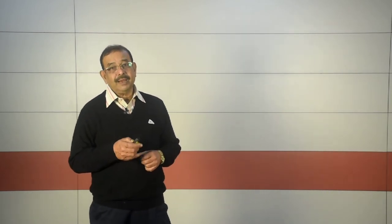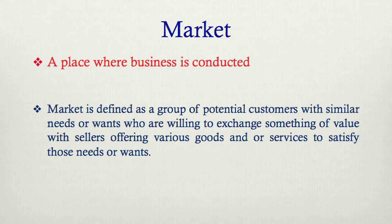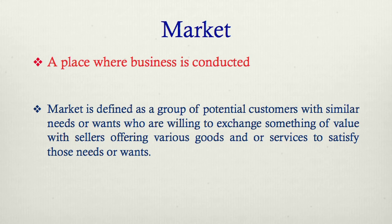For example, the television market comprises the actual customers of television and the prospective future customers. They are all parts of that market — television market in Guwahati, television market in Northeast. In that case it can be place-specific. But the formal definition from the SLM states: market is a group of potential customers including actual customers with similar needs or wants, who are willing to exchange something of value with sellers offering various goods and services to satisfy those needs and wants.